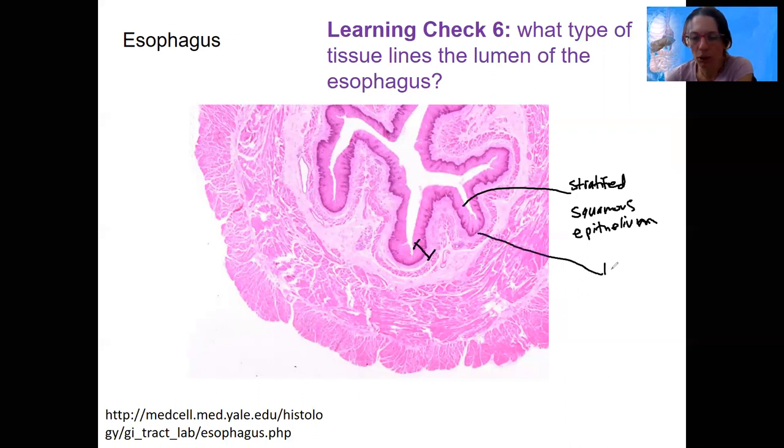This entire piece here with the lamina propria underneath, here is our lamina propria, which is areolar tissue. What is that entire region called with these two tissue types? This is our mucosa.